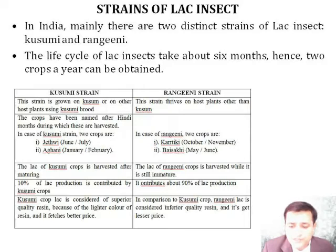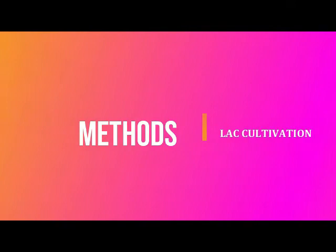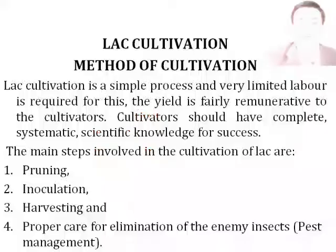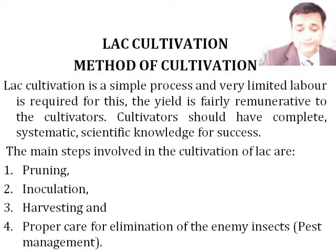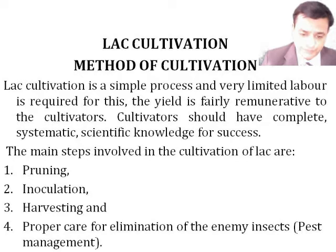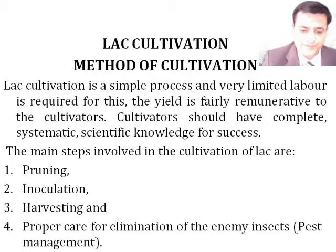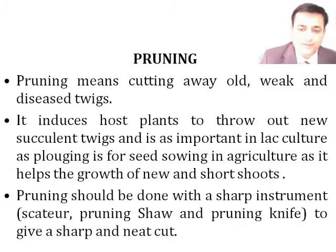The Kusumi crop is considered superior quality lac. The main steps involved in the cultivation of lac are: pruning — removing the dead and diseased parts of the plant; inoculation — starting the growth of lac insect on a particular host plant; harvesting — taking the lac from the insect; and proper pest management.